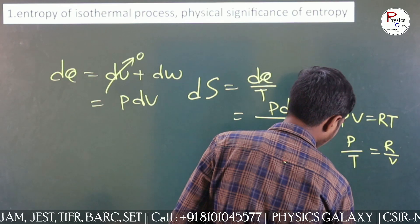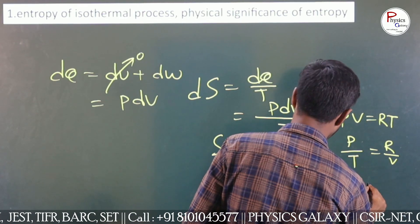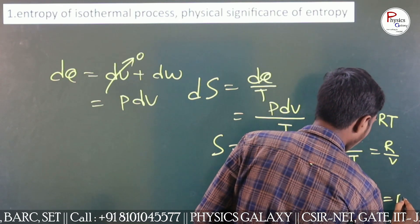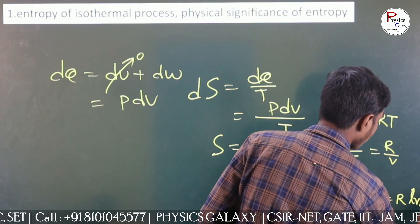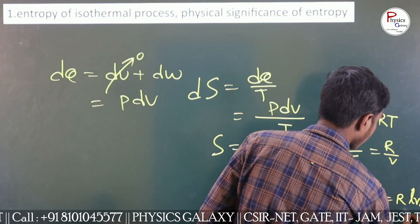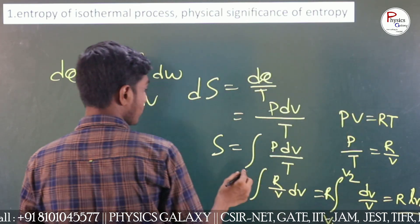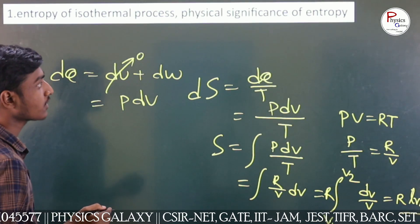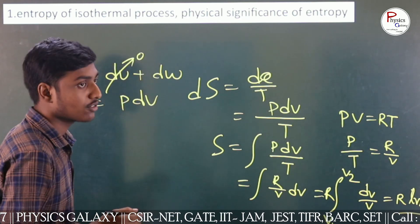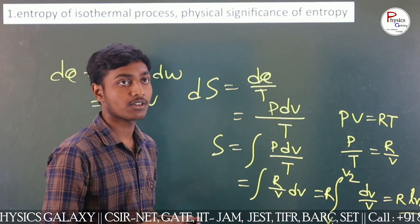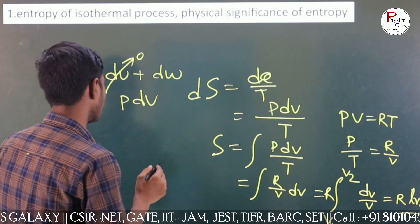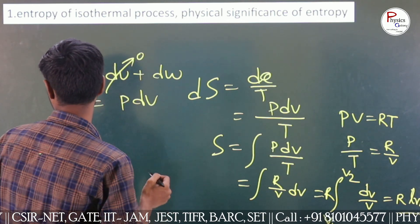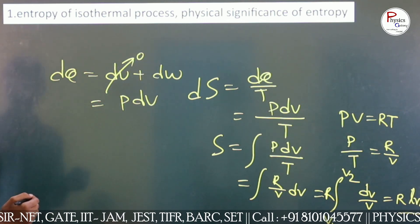Integrating from V1 to V2, we get dV by V into R, which gives R times ln(V2 by V1). That is the entropy. Then they asked me about the physical significance of entropy. As you know, entropy is a measure of disorderness or chaos. If we change the system from one state to another state, entropy always increases.